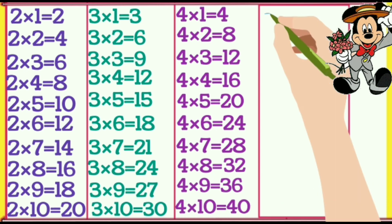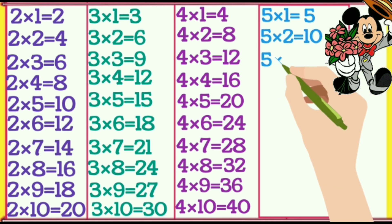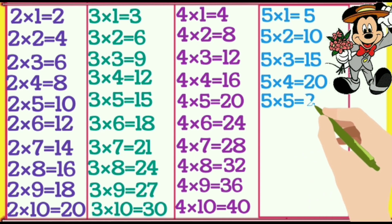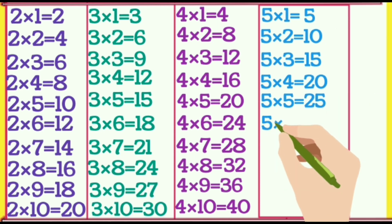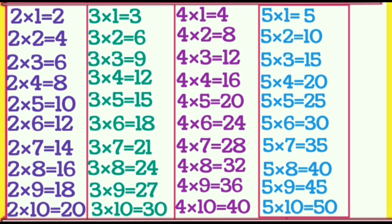4×10=40. 5×1=5, 5×2=10, 5×3=15, 5×4=20, 5×5=25, 5×6=30, 5×7=35, 5×8=40, 5×9=45, 5×10=50.